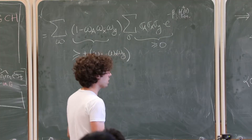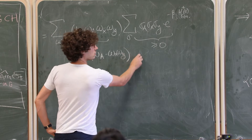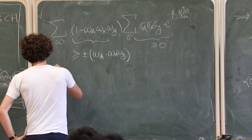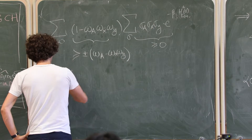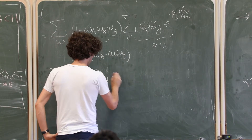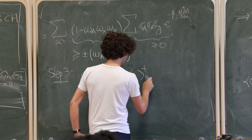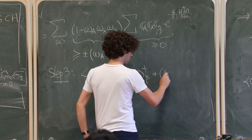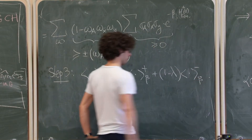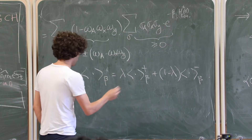Step 3: The measure ⟨·⟩_β equals λ⟨·⟩^+_β + (1−λ)⟨·⟩^−_β for some λ.